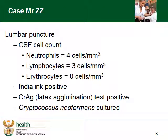Continuing with our case of Mr. ZZ, who has presented ill: all three tests were performed and he was India Ink positive, CrAg positive, and the organism was even cultured. Note that it is possible to have cryptococcal meningitis with a negative blood CrAg, because of the fungal load in the blood — the volume of antigen affects the ability of the sample to flow across the strip and yield a positive result.